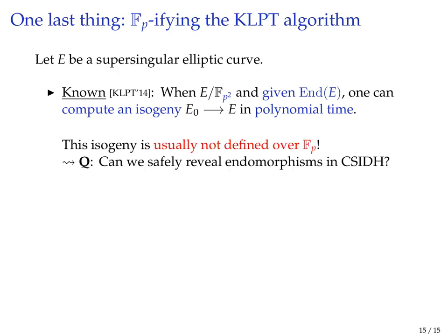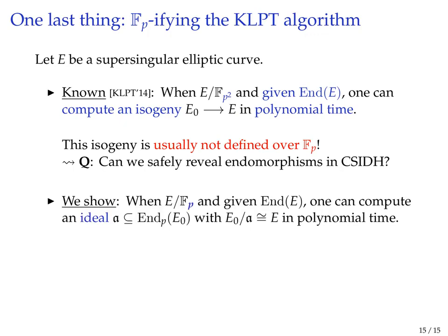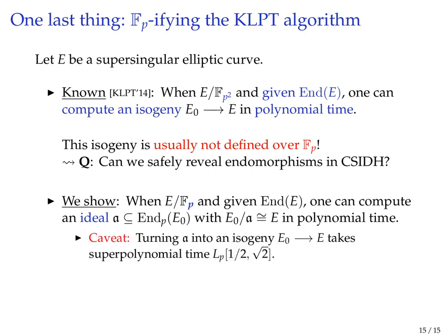However, a priori, usually this isogeny is not defined over F_p and there's not really a reason for it to be. So this doesn't really break CSIDH even if you reveal the entire endomorphism ring. The question is: maybe we can reveal endomorphisms except those that are twisting, because according to the earlier contents of this talk, those break the scheme. Our paper addresses this question by basically giving an analogue of the KLPT algorithm for curves defined over F_p. The scenario is: you're given an elliptic curve defined over F_p that's supersingular, and you're given its entire endomorphism ring over the algebraic closure. Then we output an ideal that connects that curve to some fixed starting curve in polynomial time.